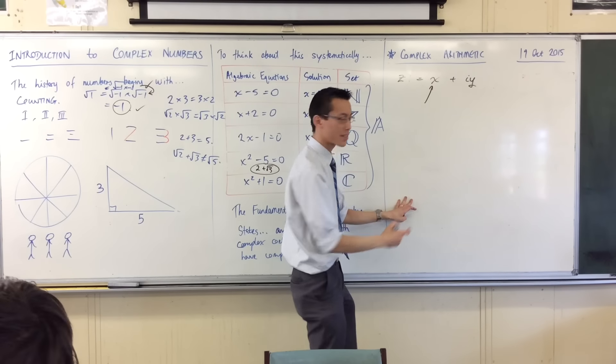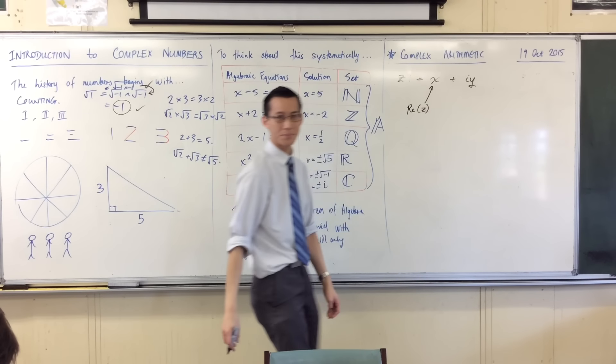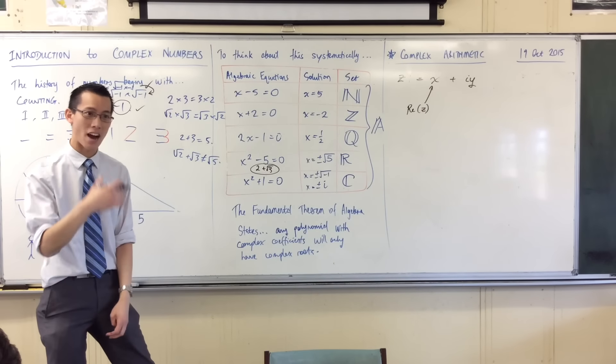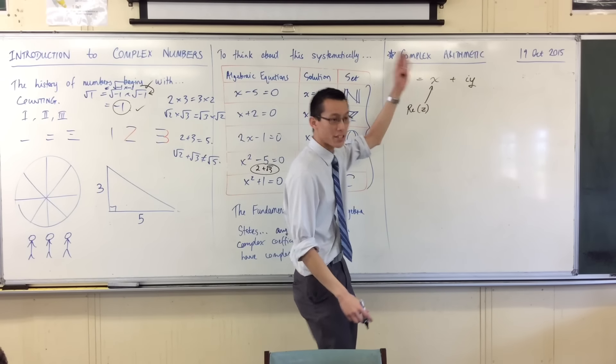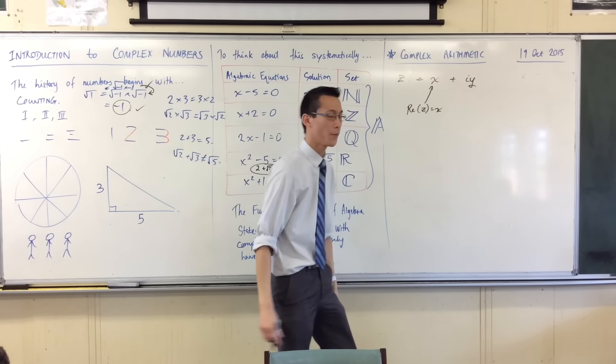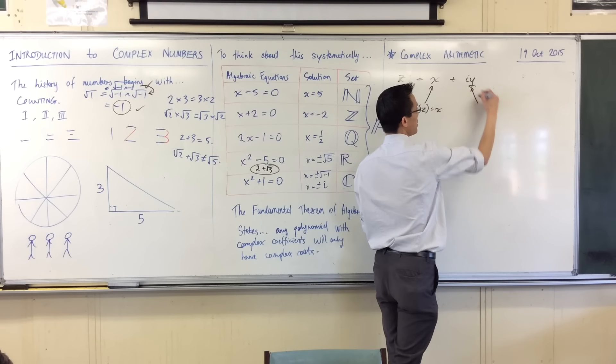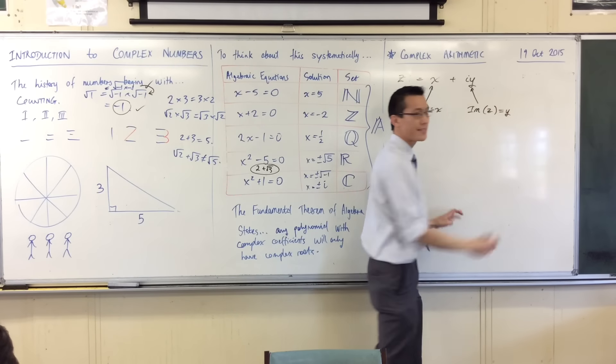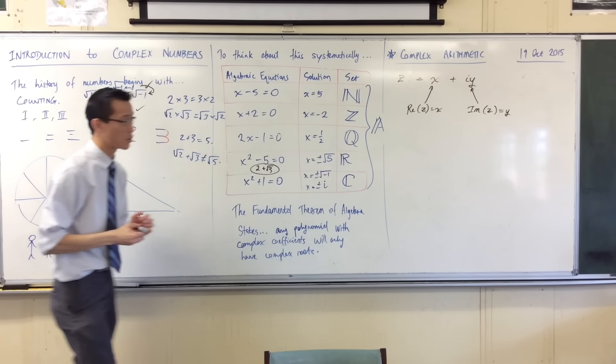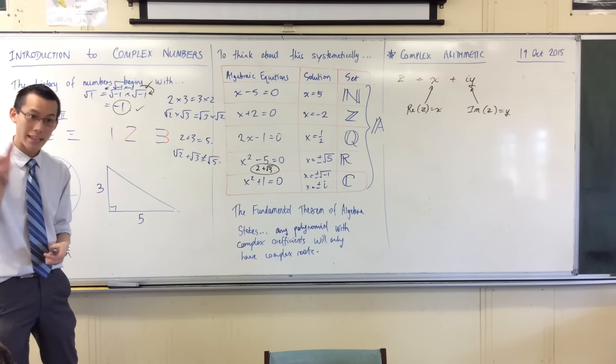So, we call this guy the X. We call him the real component of Z. R, E, A, abbreviation for real. The real part of Z is just X is equal to X. Likewise, there's an imaginary part. This part. The imaginary part of Z is just Y. So, it's the size of the imaginary part. It doesn't include an i in it. It's like the magnitude of it.